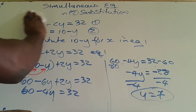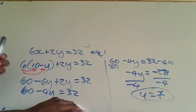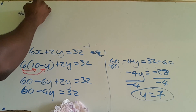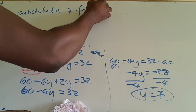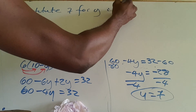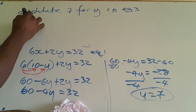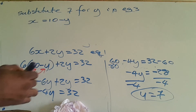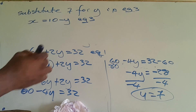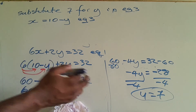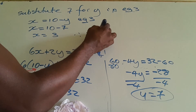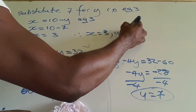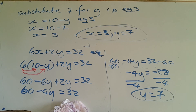Now I'm going to substitute 7 for y in equation 3, which says x equals 10 minus y. Putting 7 in place of y: x equals 10 minus 7, so x equals 3. My conclusion: x equals 3 and y equals 7. We could double check those quickly to see if they're correct. I hope you enjoyed watching this video and learned something. Thank you.